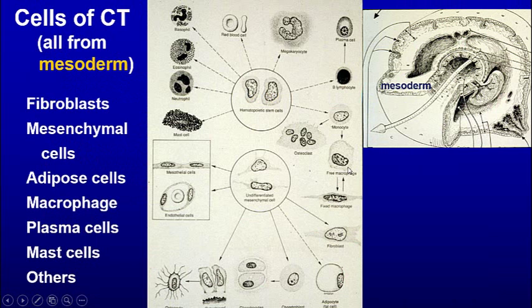These cells — including red blood cells, neutrophils, eosinophils, basophils, and monocytes — are connective tissue cells as well, along with lymphocytes. In the bone marrow you have pluripotent cells that can make a host of these other cells, including the megakaryocyte and the osteoclast that eats up bone.